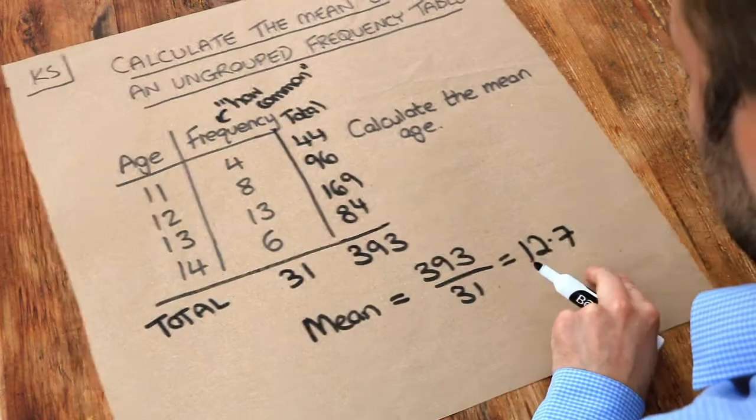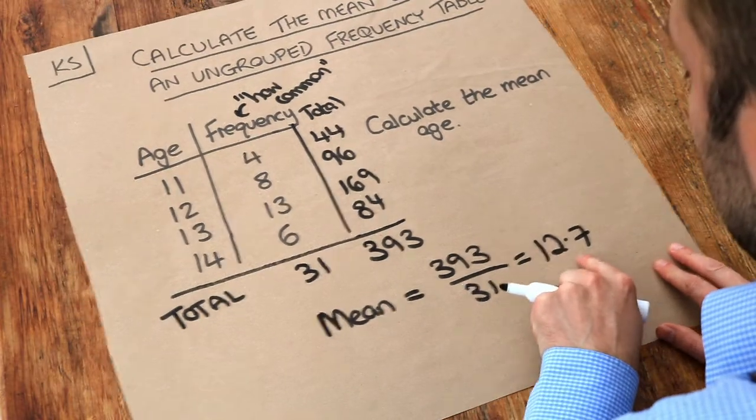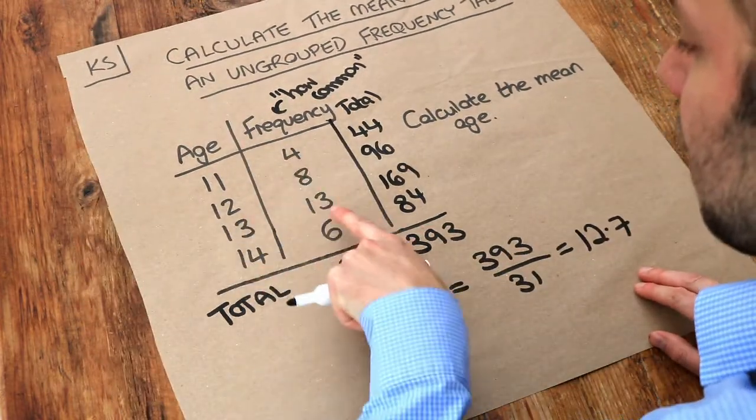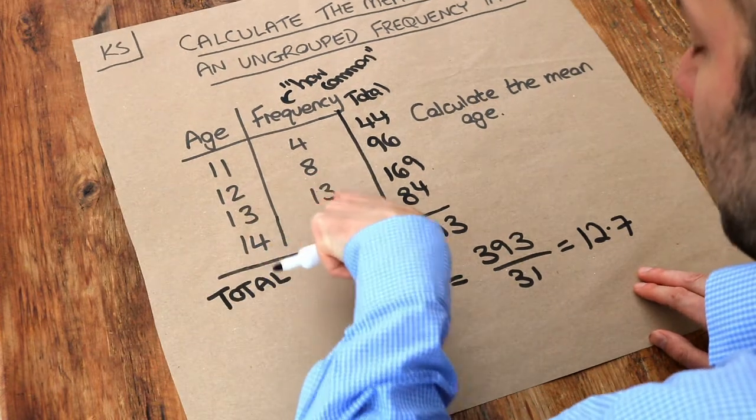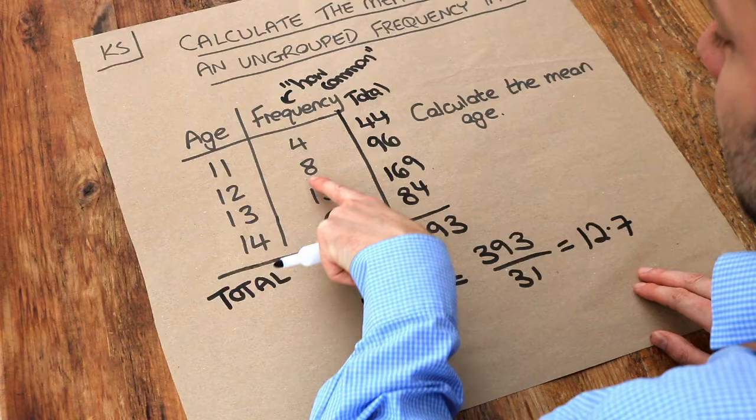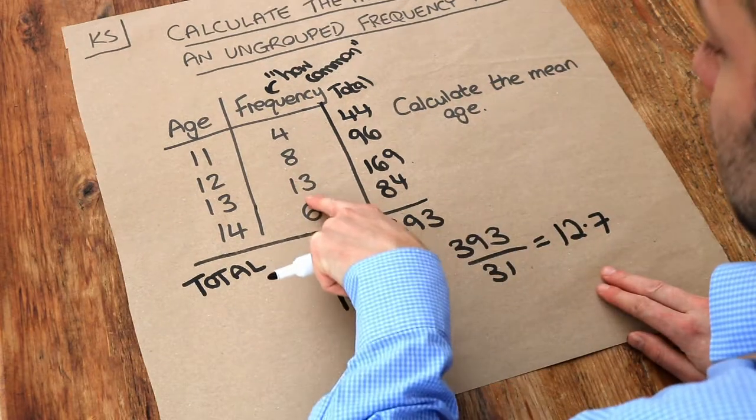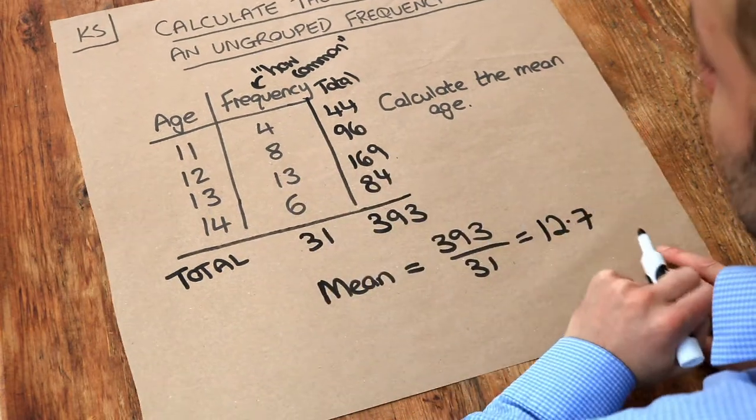And let's just check that looks sensible. A mean age of 12.7, that's kind of close to 13. Well yes, we can see it's somewhere between 12 and 13. But we've kind of got more people in this upper half. So it makes sense that it's skewed towards the 13 rather than 12. So it seems like a sensible value.